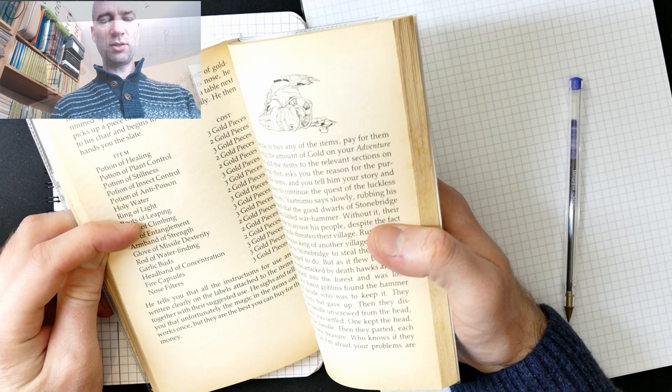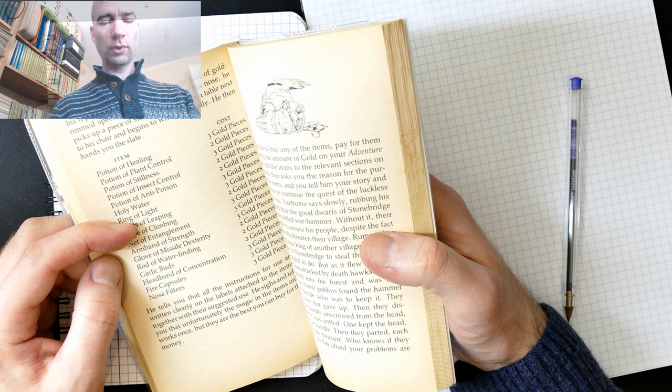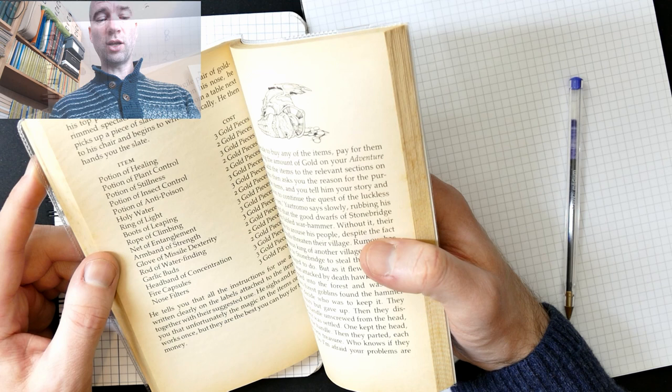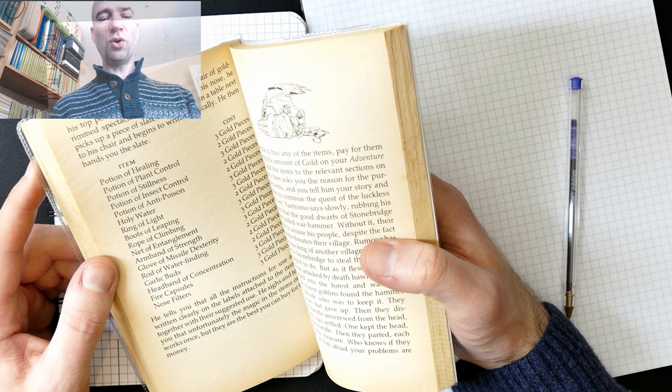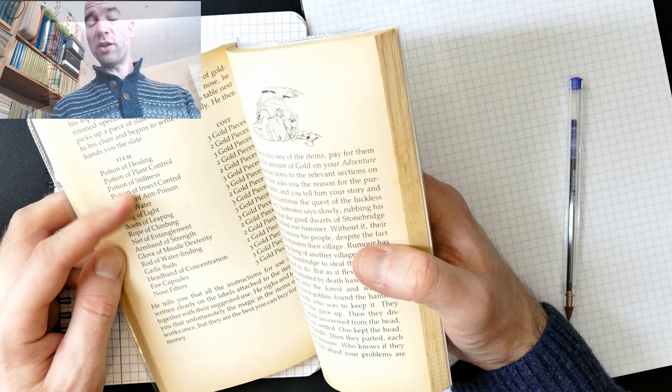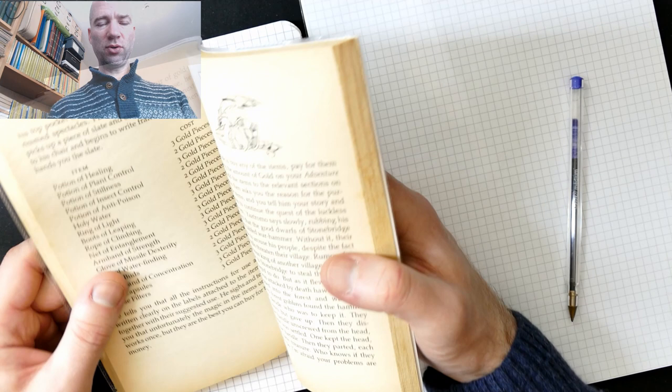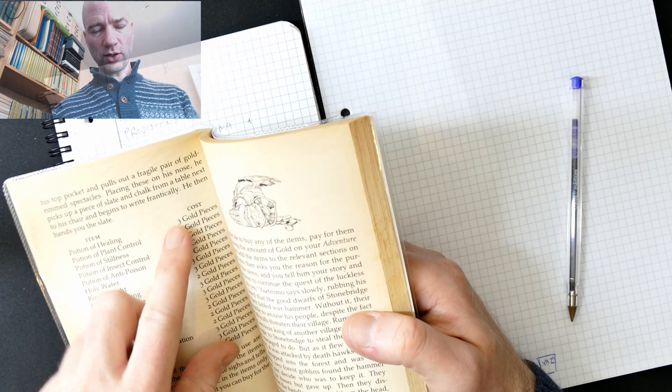So these are the items I can... Right, so we've got Potion of Healing, Potion of Plant Control, Stillness, Insect Control, Anti-Poison, Holy Water, Ring of Light, Boots of Leaping, Rope of Climbing, Net of Entanglement, Armband of Strength, Glove of Missile Dexterity, Rod of Water Finding, Garlic Buds, Headband of Concentration, Fire Capsules and Nose Filters. Now, I know a lot of these are needed. I'm sure maybe all of them are needed actually at some point in the game. You have 30 gold, so you can buy about 10, 12 things. Let's see how many things are there, 1, 2, 3, 4, 5, 6, 7, 8, 9, 10, 11, 12, 13, 14, 15, 16, 17 things.